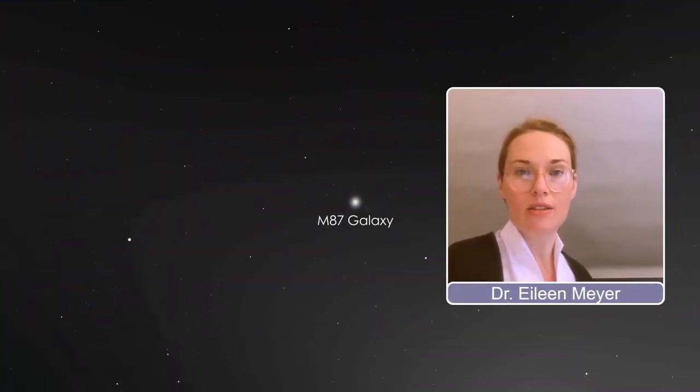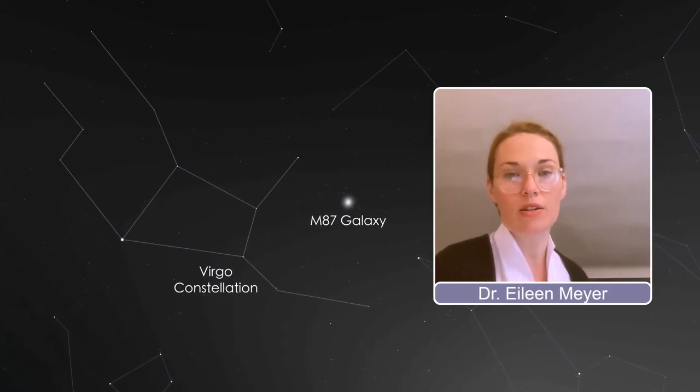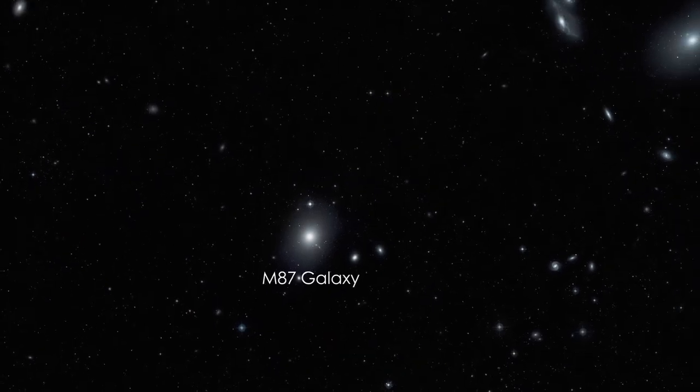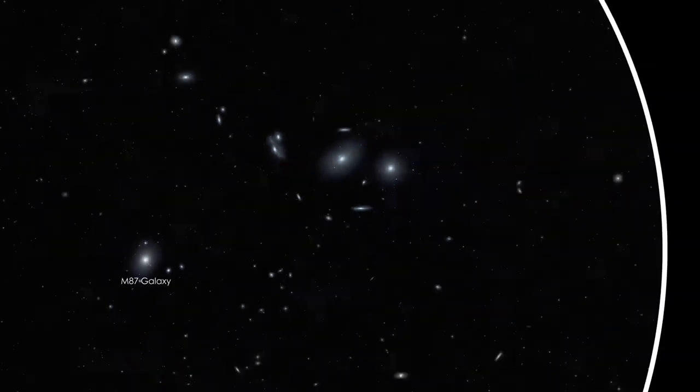So for the sky watchers out there, M87 is in the constellation of Virgo, the second largest constellation in the sky. And it sits in what we call the Virgo cluster of galaxies, 55 million light years away.